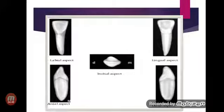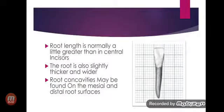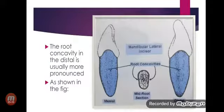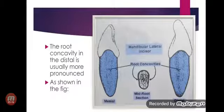The various aspects of the mandibular lateral incisor include the labial aspect, lingual aspect, mesial aspect, distal aspect, and incisal aspect. The root length is normally a little greater than in central incisors. The root is also slightly thicker and wider, and root concavities may be found on the mesial and distal root surfaces. The root concavity on the distal is usually more pronounced.